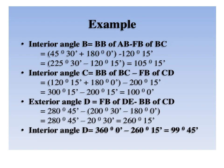This slide refers to calculation of interior angles. The formula is: interior angle B equals the back bearing of AB minus the fore bearing of BC. When calculating the back bearing of AB, since the fore bearing of AB is 45 degrees 30 minutes, which is less than 180 degrees, you add 180 degrees to get the back bearing of AB. From that you subtract the fore bearing of line BC.